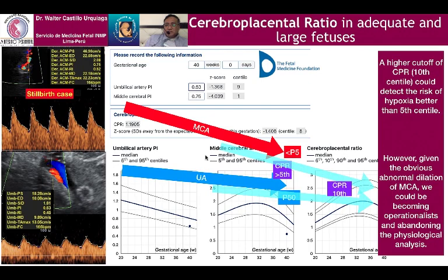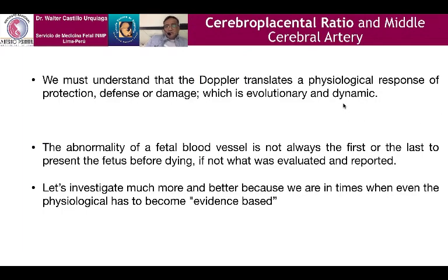Continuing to evaluate just the umbilical artery in large and normal fetuses at risk of hypoxia will continue resulting in stillbirth and other adverse outcomes. We must understand that Doppler translates a physiological response of protection, defense, or damage, which is evolutionary and dynamic. The abnormality of a fetal blood vessel is not always the first or the last to present before the fetus dies — rather, what was evaluated and reported matters.